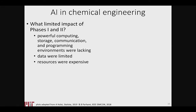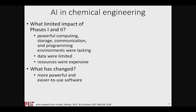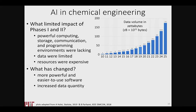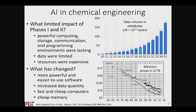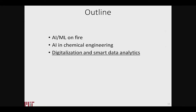What limited the earlier phases was really that they didn't have the powerful and cheap computing, storage, communications, and environments that exist today. Data were limited and resources were very expensive. Now there's lots and lots of free software that's easy to use and very powerful, with huge increases in data quantity, fast and cheap computers, and especially fast and cheap memory — which is very critical for these applications.